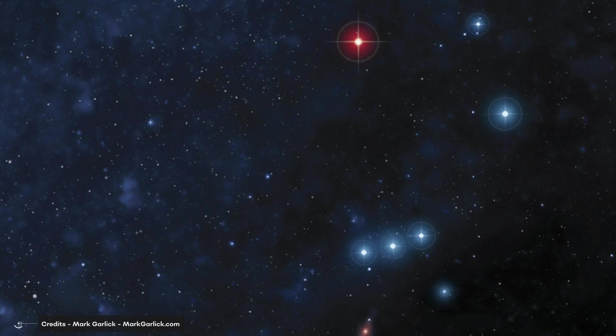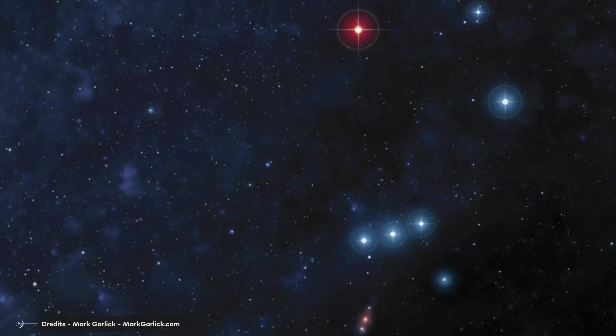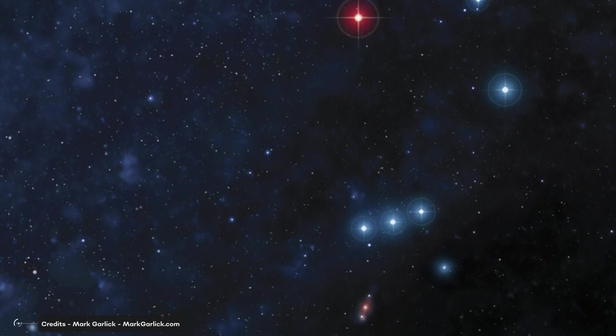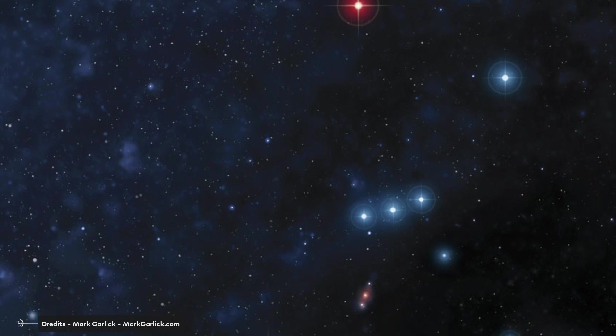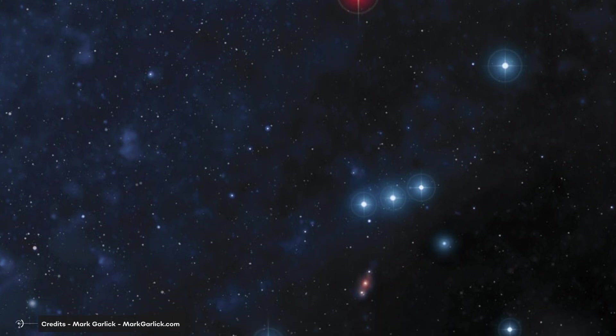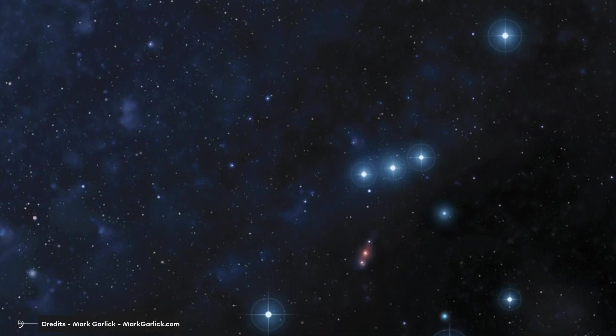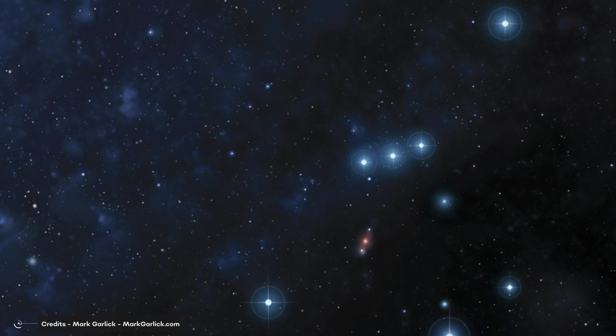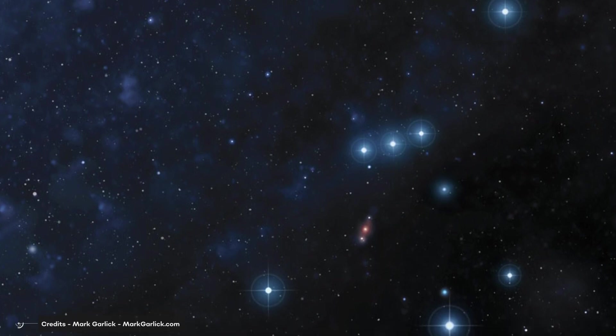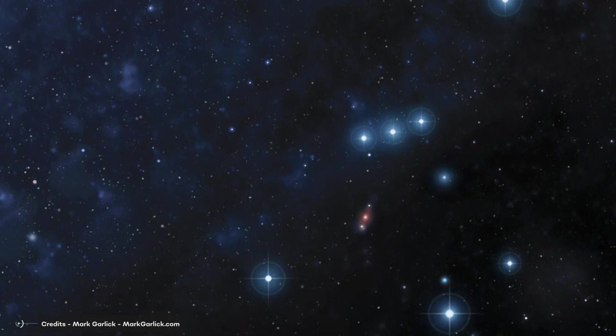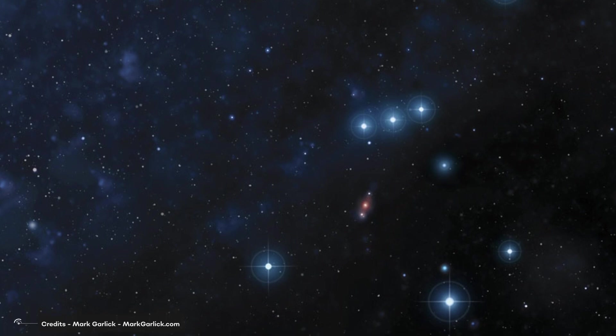No matter where you are on the planet, if you look up to the night sky, you will be able to spot Rigel without the aid of optics. Its brilliant blue coloring and position as the brightest star in one of the most well-known constellations makes it easily identifiable. And even if you can't spot it with the naked eye, it is still a beautiful sight to witness through a good set of binoculars or a telescope.